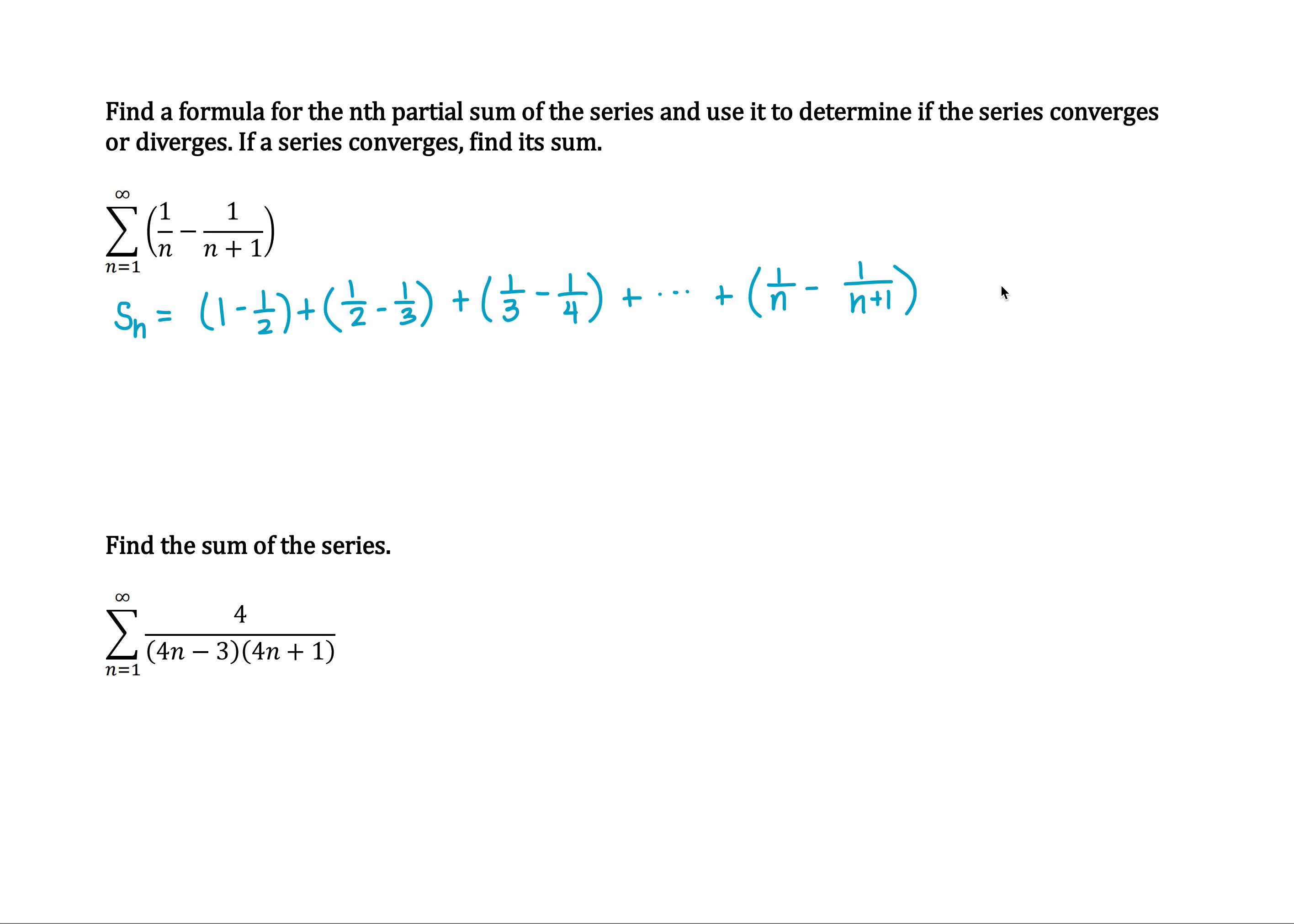So all we're left with is 1 minus 1 over n plus 1. That's the nth partial sum.